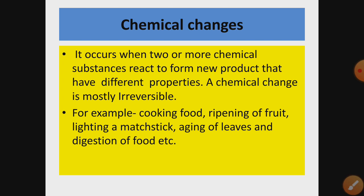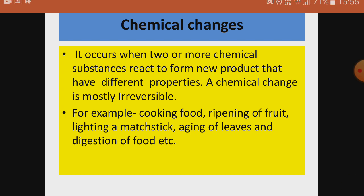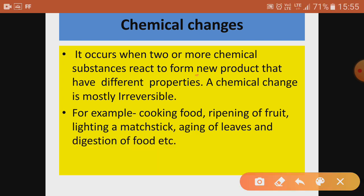Next is chemical changes. Chemical changes occur when two or more chemical substances react to form a new product. Our basic concern here is the production of a new product — we cannot get back the original substance. This is the special characteristic feature of a chemical change.